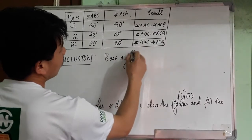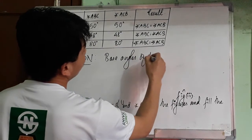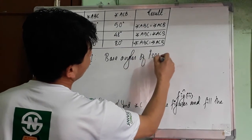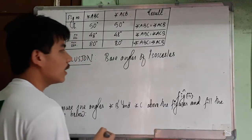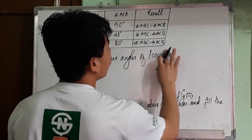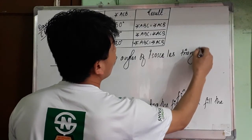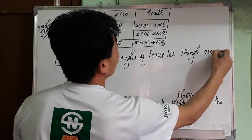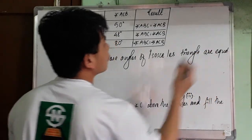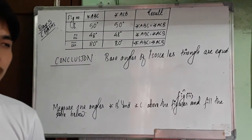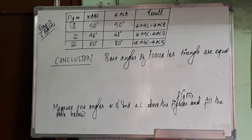Base angles of isosceles triangles are equal. So this is the final result.